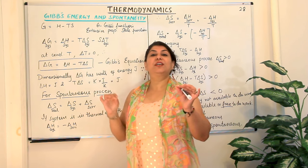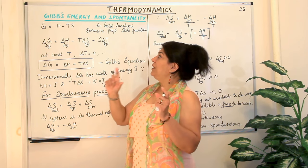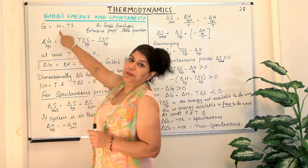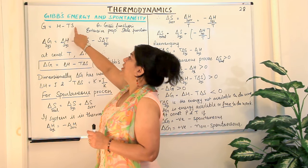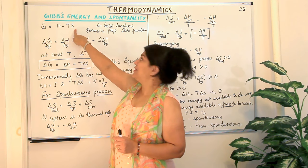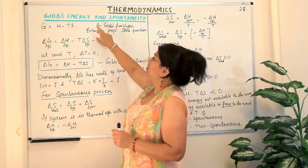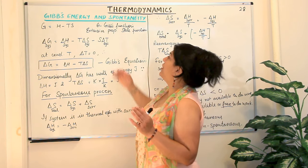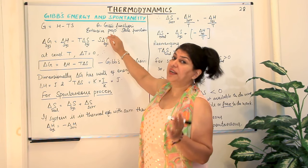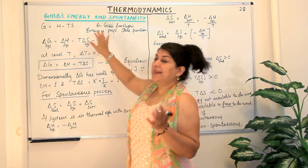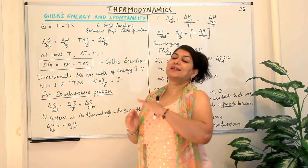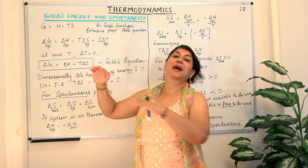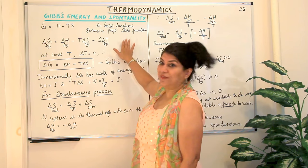Gibbs energy is given by the equation: Gibbs energy is equal to enthalpy minus the temperature multiplied by the entropy of the system. It is represented by G and is known as the Gibbs function or Gibbs free energy. It is an extensive property and a state function, meaning it depends only on the state of the system, not on the path of the reaction.